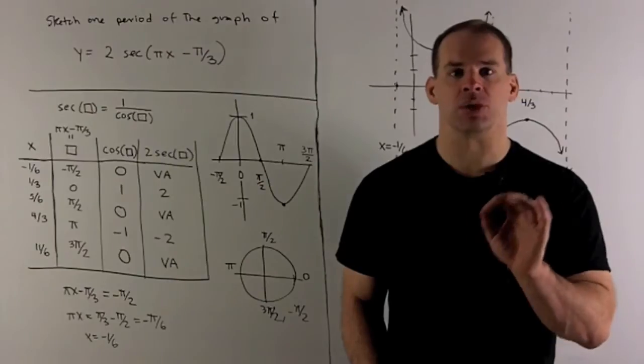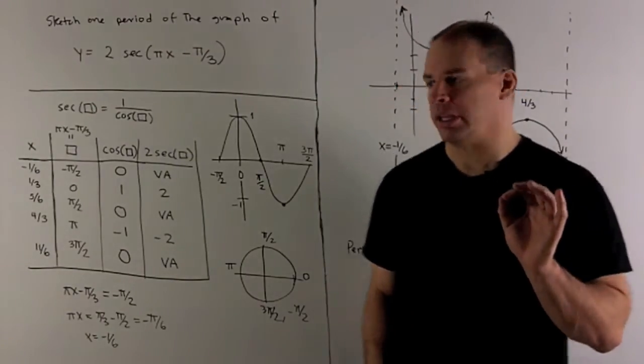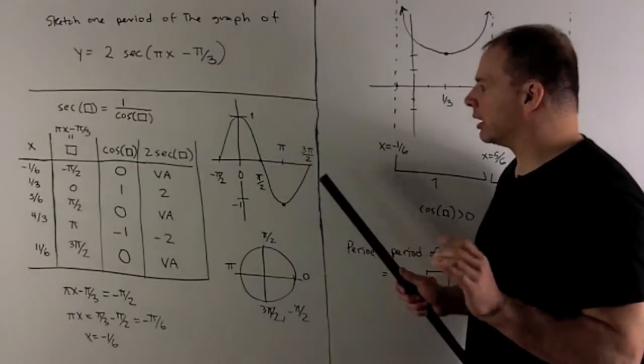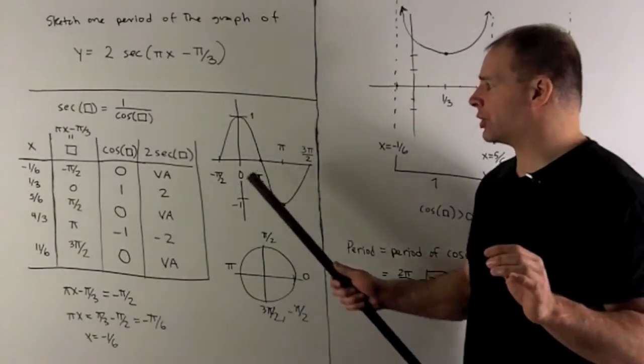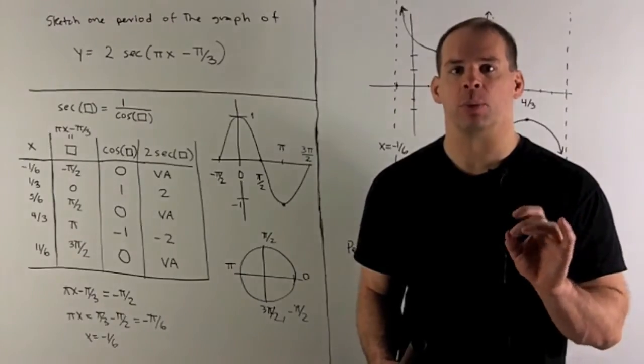Now secant is 1/cosine, so let's review cosine. Here is one period of the graph of cosine. Let's start at -π/2—that'll give us a nice picture of secant when we get to that.